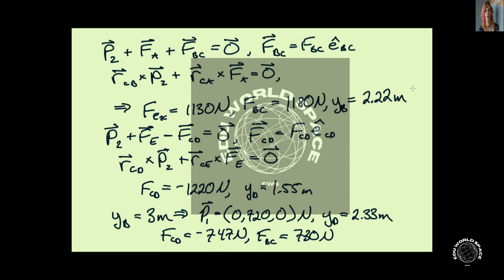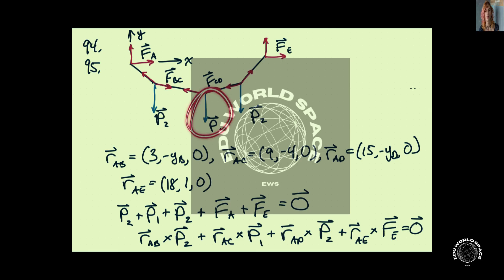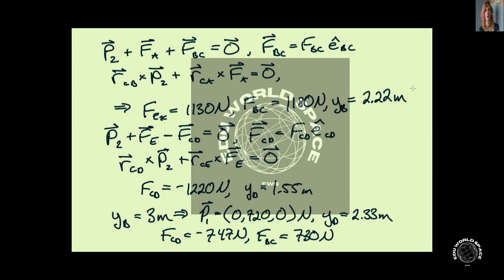Now, in problem 95, which looks at the same system, we're basically just given different knowns and different unknowns. And in this case, we want the magnitude of this load. If YB, this value here, is three meters. So in this case, we want the magnitude of this load. And then also this sag here. We basically just go through the exact same analysis. But now, we have a different unknown and a different knowns.